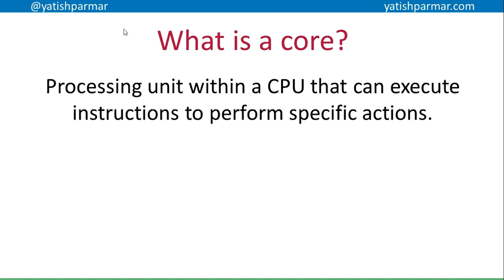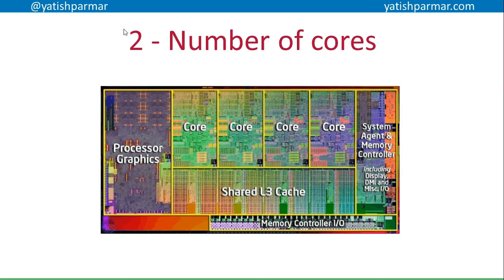The next thing to think about is: what is a core? A core is a processing unit within the CPU itself that executes the instructions in order to produce the desired result. The CPU has many other components, but within it, the core is the bit that has a control unit, ALU, and so on. So, the second way of improving the performance of the CPU is by increasing the number of cores. If you look at this schematic of a CPU, you can see that this is a quad-core processor because it has four cores within it.